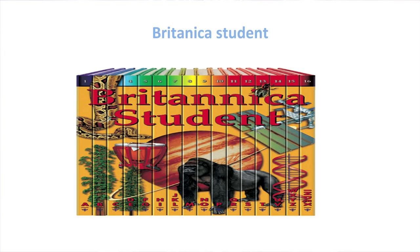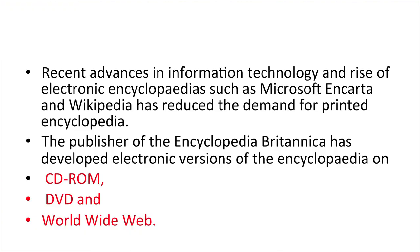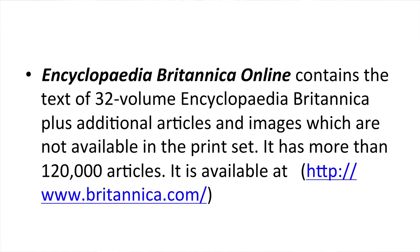The 16-volume Britannica Student Encyclopedia has more than 2,300 articles with 33,000 photos, illustrations, charts, and tables. The encyclopedia has 1,000 maps and flags of various countries of the world. Recent advances in information technology and the rise of electronic encyclopedias such as Microsoft Encarta and Wikipedia has reduced the demand for printed encyclopedias. Encyclopedia Britannica has developed electronic versions on CD-ROMs, DVD, and the World Wide Web. Encyclopedia Britannica Online contains the text of the 32-volume set plus additional articles and images, with more than 120,000 articles, available at www.britannica.com.